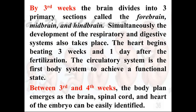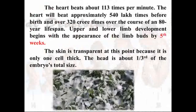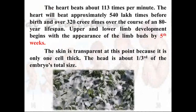Between the third and fourth week, the body plan emerges — the brain, spinal cord, and heart of the embryo can be easily identified. The heart beats about 113 times per minute during this development. The heart will beat approximately 540 lakh times before birth and over 320 crore times over the course of an 80-year lifespan.